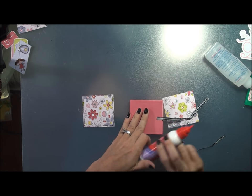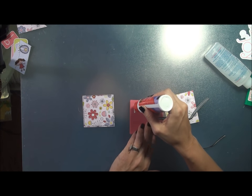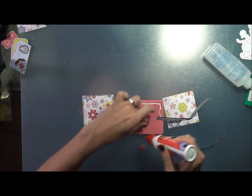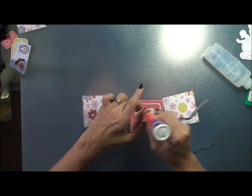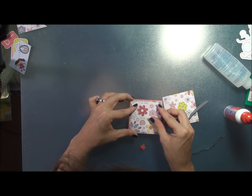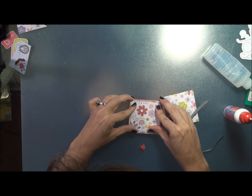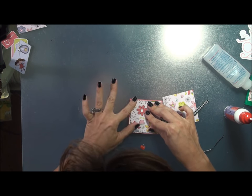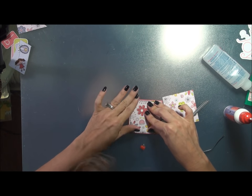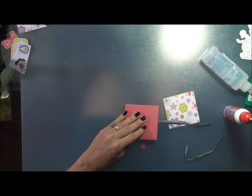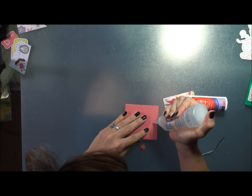So just get a little bit of Fabri-Tac on there. And then we are going to adhere the cover and the back cover. And the 2 and 7/8 by 2 and 7/8 will just give you a little bit of a frame around it. So that you can see the pink.